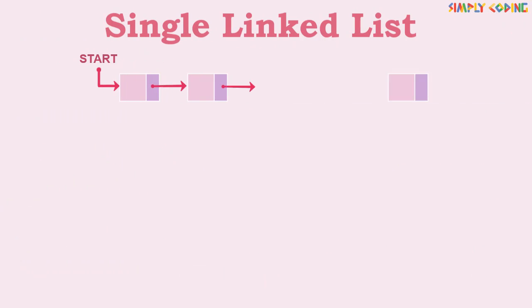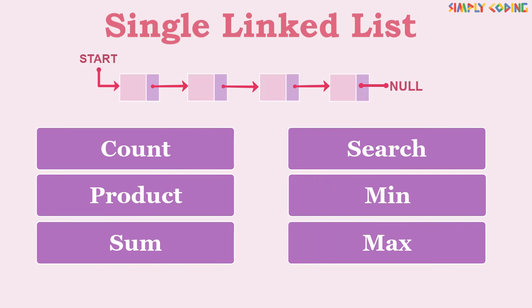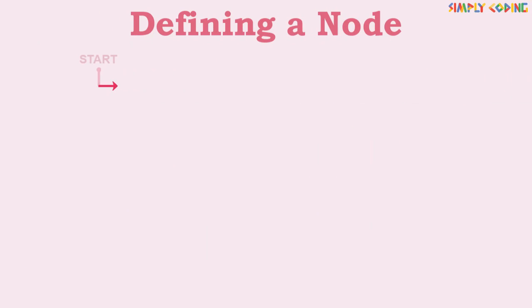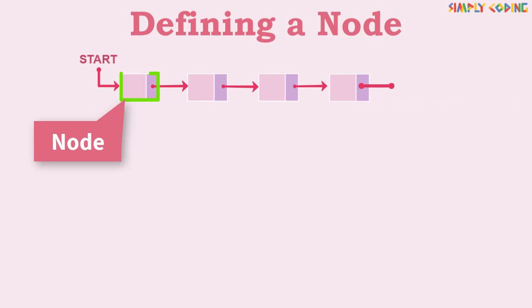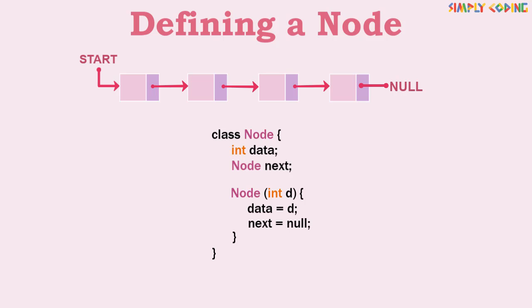In this video we will cover algorithms and programs which perform different operations on single linked list. To create a linked list, the first thing you need to define is the node. We will declare a class node which has two attributes: an int data and a node next, meaning it points to the next node of the same class. We also define a parameterized constructor which takes in a value to initialize the data in the node and makes next point to null.